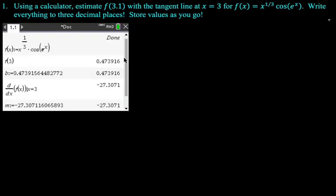So here is what I did first. I defined the function. I found f(3). I stored that as b. I don't know, because I think of the point as like a, b, which is why I stored it as b. Then I found the derivative at x equals 3. I got negative 27.307. I stored that as m for slope, because why not?